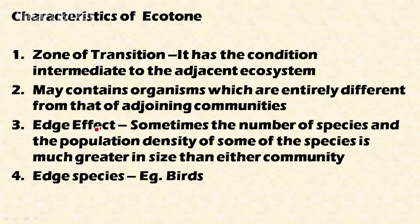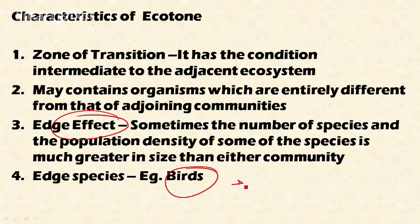Another important concept is edge effect, which is important from an examination point of view. In an ecotone, sometimes the number of species and the population density of some species is much greater than in either adjoining community — this is called edge effect. Certain edge species, such as birds, are present in greater numbers and with higher population density in transitionary ecosystems like ecotones.